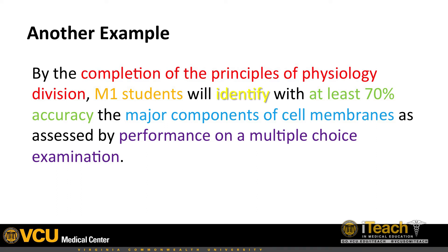Here's another example using the template, this one from a basic science course: by the completion of the Principles of Physiology division, M1 students will identify with at least 70% accuracy the major components of cell membranes, as assessed by performance on a multiple choice examination. We have clearly identified the when — completion of the division; the who — M1 level students; a specific verb — identify; the what — major components of cell membranes; to what extent — 70% accuracy; and the assessment method — a multiple choice examination. Students will know they have to specifically identify the cell membrane components, and it's measurable: they need to achieve at least 70% on a standardized multiple choice examination.